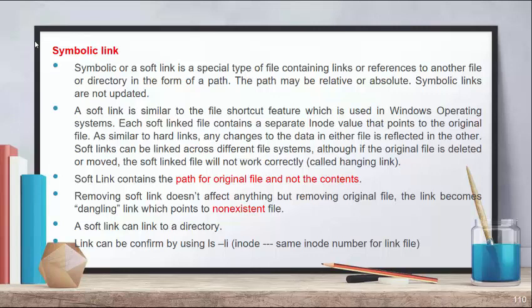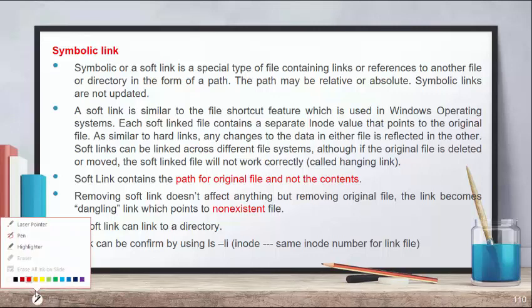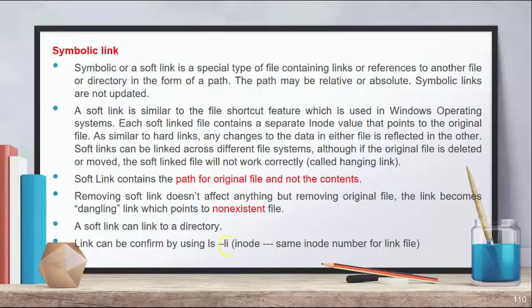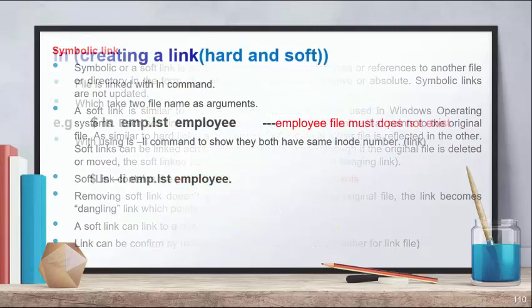A soft link can also create a link to a directory, whereas with hard links you cannot link one directory to another directory. To confirm whether a link exists, you check the inode number using ls -li. If two, three, or four files have the same inode number, that means they are linked with each other.